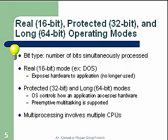There are three OS modes: real 16-bit, protected 32-bit, and long 64-bit. You need to understand the difference between real and protected mode. The bit type refers to the number of bits simultaneously processed — 16-bit, 32-bit, or 64-bit. Real mode is 16-bit and exposes the hardware directly to applications. It is no longer used because protected mode was developed — the 32-bit or long 64-bit — where the OS now controls how an application accesses the hardware.